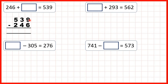9 minus 6 is 3. 4 is larger than 3, so go to the left — one less, one in front. 13 minus 4 is 9. And 4 minus 2 is 2. So our missing number is 293.